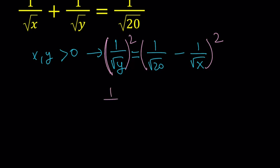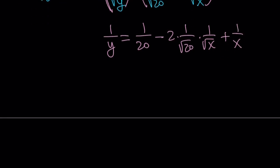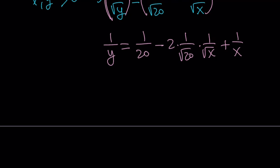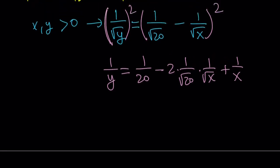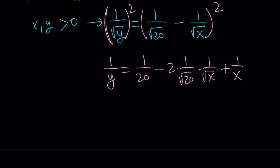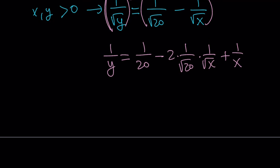When we square the difference on the right-hand side, we get 1 over y equals 1 over 20 minus 2 times the middle term, plus 1 over x. Notice that everything is rational here since x and y are positive integers. We can simplify this as 1 over y equals 1 over 20 plus 1 over x minus 2 over square root of 20x.